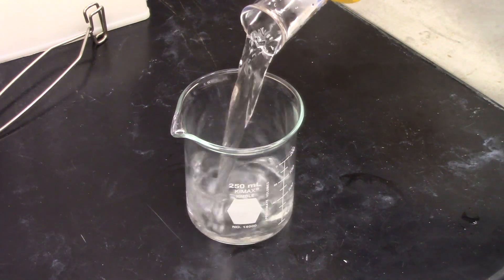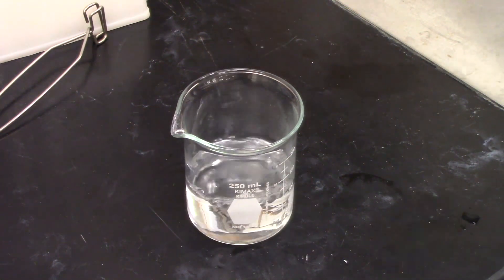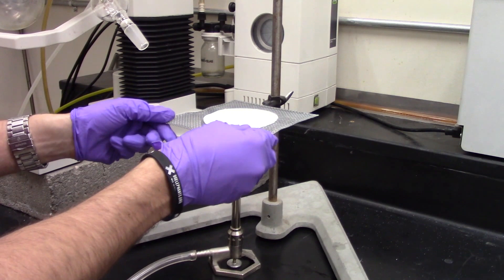Prepare a water bath by filling a 250 mL beaker three quarters full of water. Place the beaker on the ring stand and heat to 90 degrees Celsius.